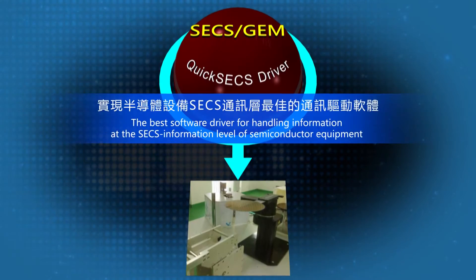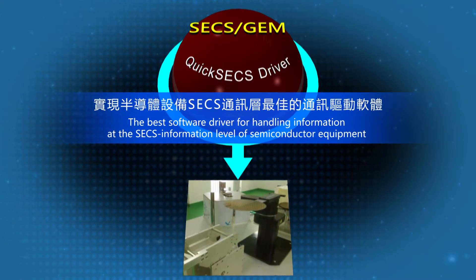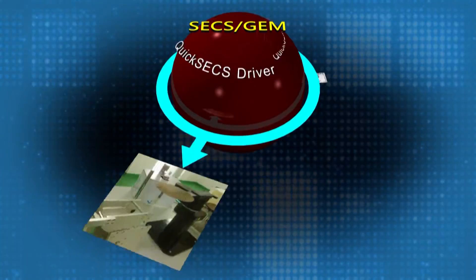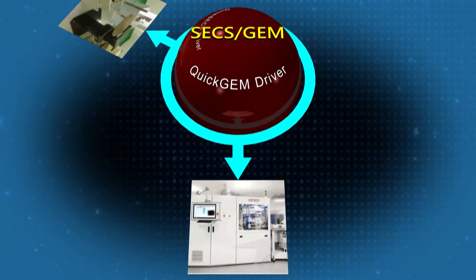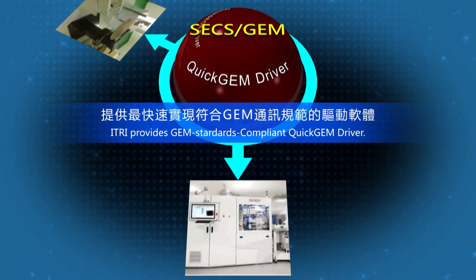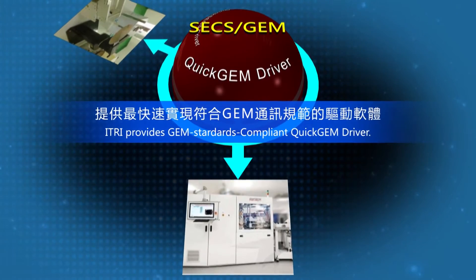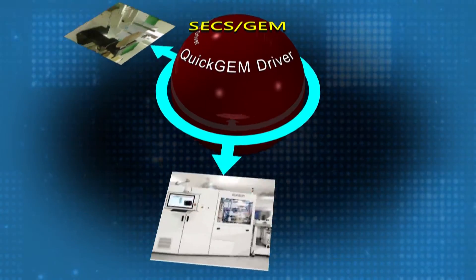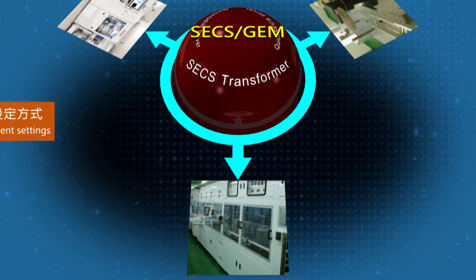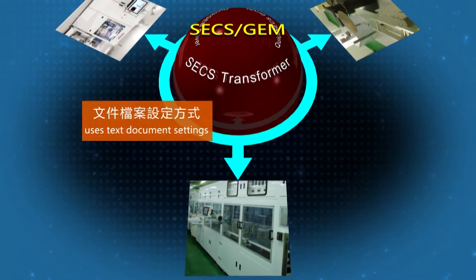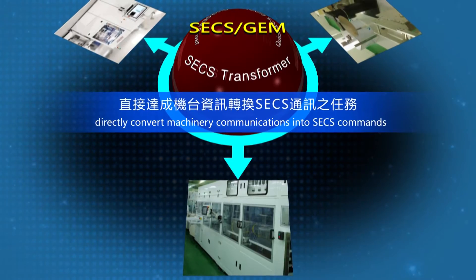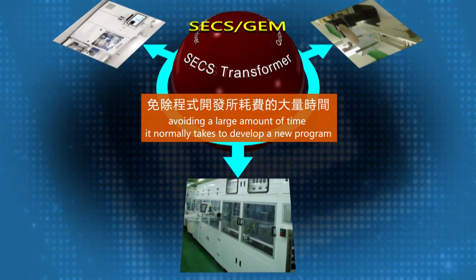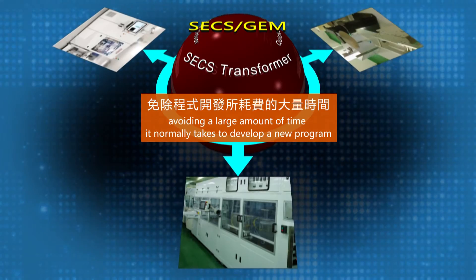QuickSECS Driver is the best software driver for handling information at the SECS information level of Semiconductor Equipment. In addition, eTree has developed GEM standards compliant Quick GEM Driver to meet needs at the GEM level of Semiconductor Equipment. SECS Transformer software uses text document settings to directly convert machinery communications into SECS commands, avoiding a large amount of time it normally takes to develop a new program.